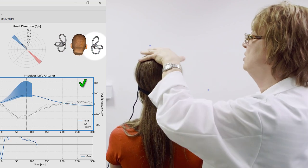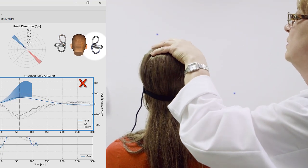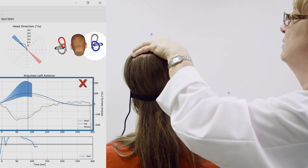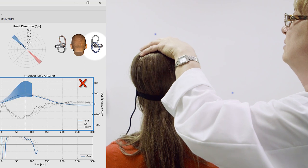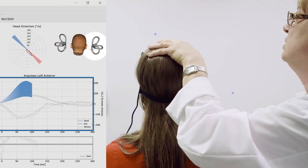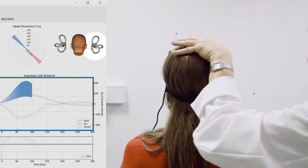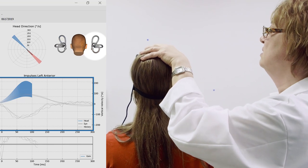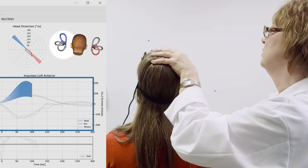The right posterior canal is turning blue because that one is inhibited. And then when I come back backwards, now you can see that the right posterior canal is the one that's being excited, so it turns red. And the left anterior canal is being inhibited, so it turns blue.